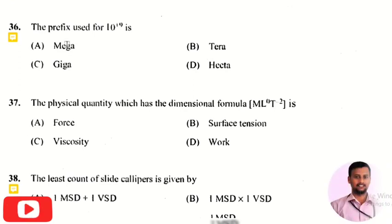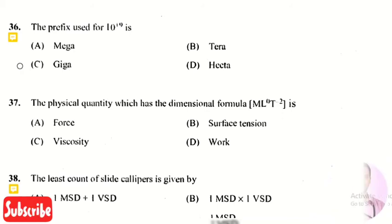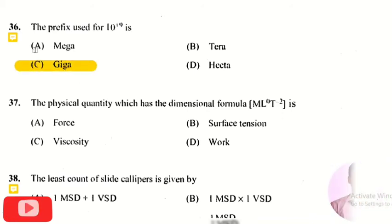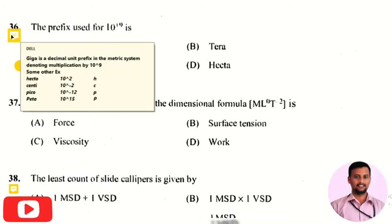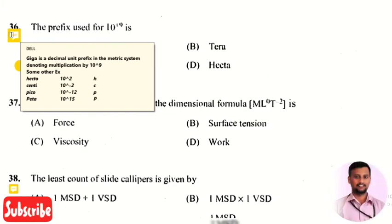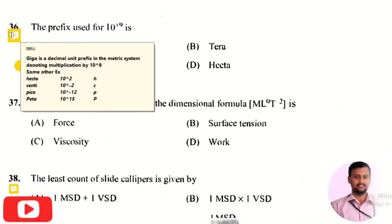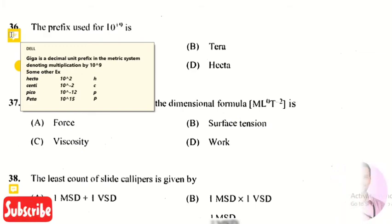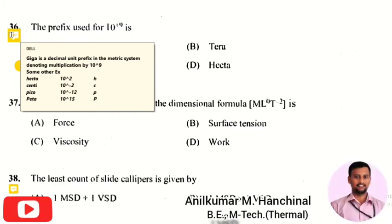The next question is: the prefix used for 10 raised to plus 9 is? The right answer is option 3, that is GIGA. GIGA is a decimal unit prefix in the metric system denoting multiplication by 10 raised to 9. Other examples of decimal unit prefixes: 10 raised to 2 is hecto, 10 raised to minus 2 is centi, 10 raised to minus 12 is pico, and 10 raised to 15 is peta.